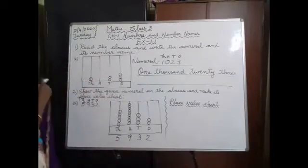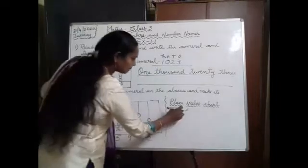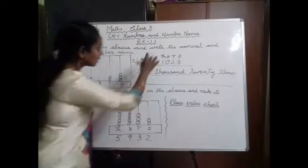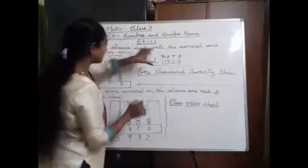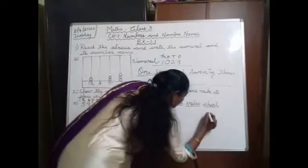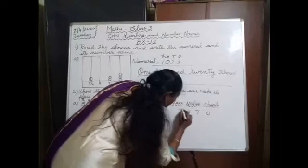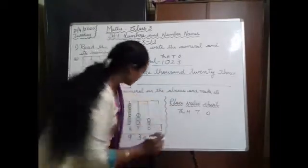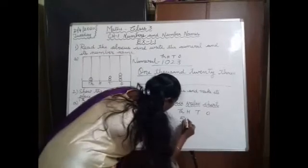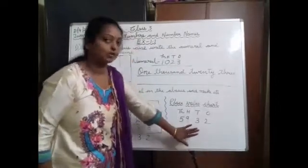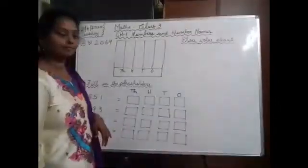We have represented the number on the Abacus. Now we have to write the place value chart. You only have to represent it like this: 1, 10, 100, 1000. This number should be represented in this chart — 5,932. This is the place value chart.